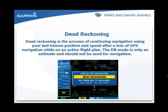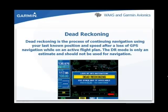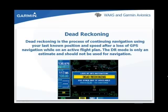Dead reckoning is a process of continuing to navigate based on your last known position and speed after GPS reception has been lost while on an active flight plan. The dead reckoning mode is only an estimate and should not be used for navigation. In dead reckoning mode, several display changes occur: the own ship icon color changes to yellow, the to/from flag is removed from the CDI, DR appears on the left side of the map, all external inputs dependent on GPS position are flagged, terrain is not available, and traffic and storm scope information is not shown on the map page. Dead reckoning mode is only allowed in en route and oceanic modes. In terminal or approach mode, a no GPS position message is displayed on the map.